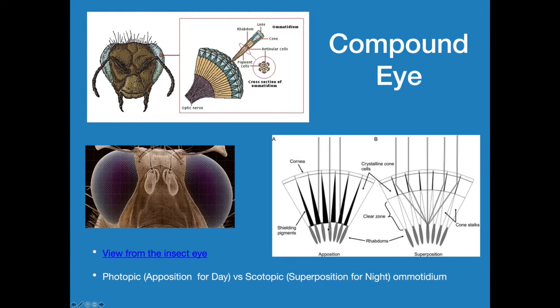Here is a basic cross section of an ommatidium. On the left we have apposition ommatidium, and on the right we have superposition. With apposition, the rhabdoms are lined up fairly the same way — they're a little wider apart in superposition. The corneal lens is on top, and the cone cells are much broader on the outside in superposition. This causes light to shine directly in, so the insect sees more forward. In the night vision superposition (scotopic), the stalks are much narrower and don't have nearly the same amount of shielding pigments. When rhabdoms receive light, they bounce it around inside the ommatidium, giving a broader field of view to intensify the limited light at night.